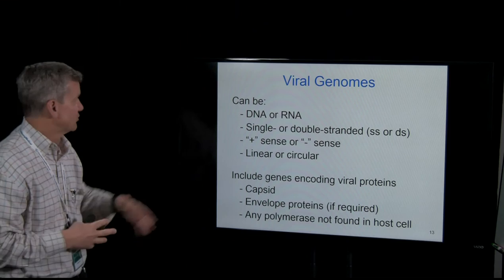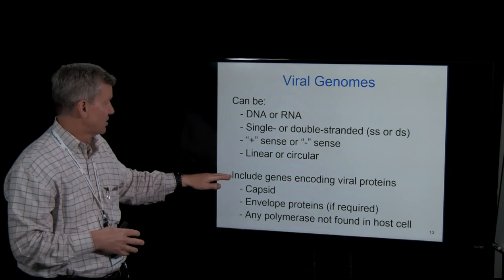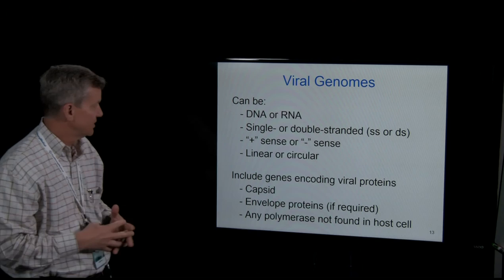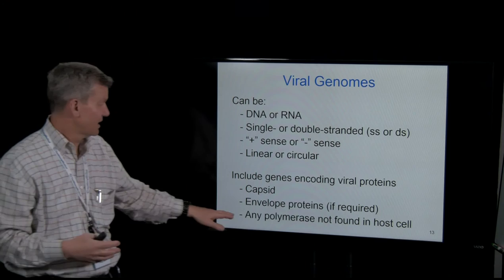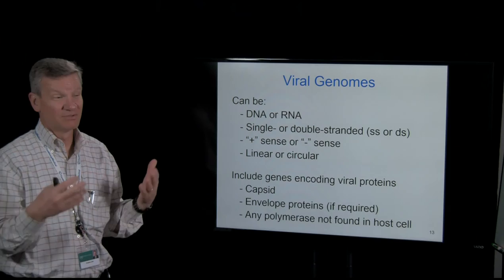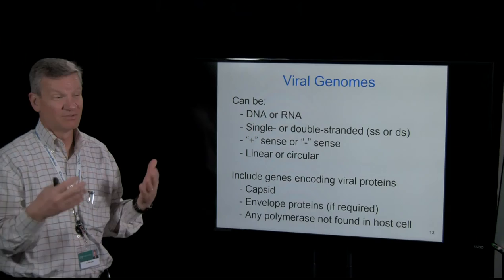Viral genomes can be linear or circular. The genomes include instructions for making capsid proteins, instructions for making envelope proteins if the virus is enveloped, and if the virus doesn't carry its own polymerase, instructions for making one. Many viruses have to make their own viral polymerase because they can't use the host cell polymerase.